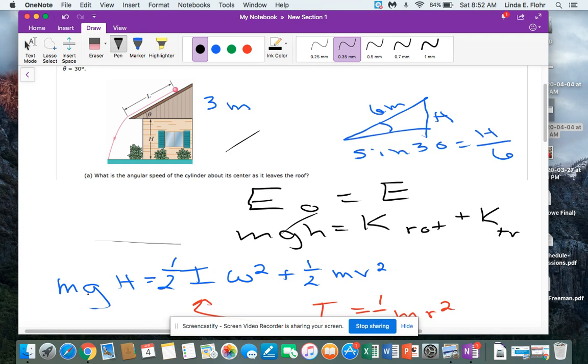So my next step down would be to substitute in for what is potential and what's kinetic. So mgh equals one half I omega squared plus one half mv squared.